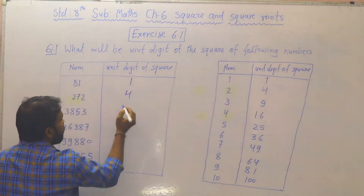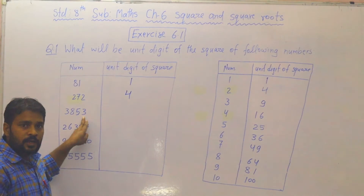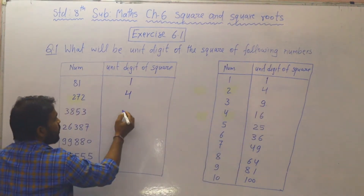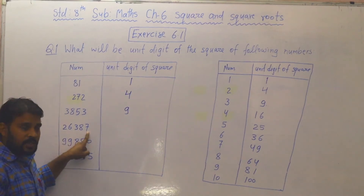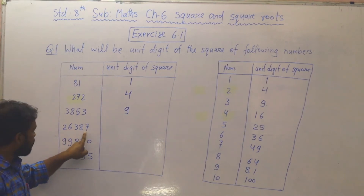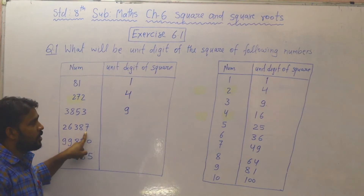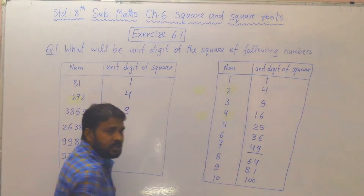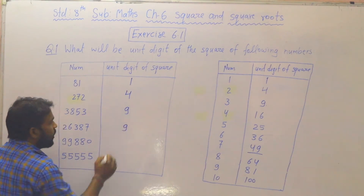यहाँ पे unit digit 3 है, तो square करने के बाद unit digit पे आपका आएगा 9. Unit digit यहाँ पे 7 है — 26,387 — यहाँ पे unit digit 7 है. 7 का square 49, तो 7 के square करने के बाद unit digit 9 आएगा.